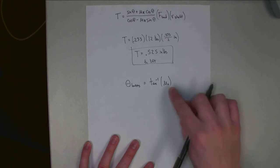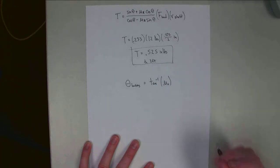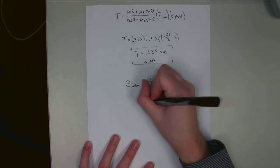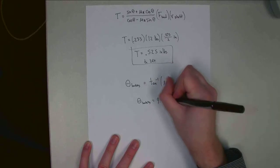That coefficient of friction was 0.16. Taking the arc tangent of 0.16, theta locking equals about 9.09 degrees.